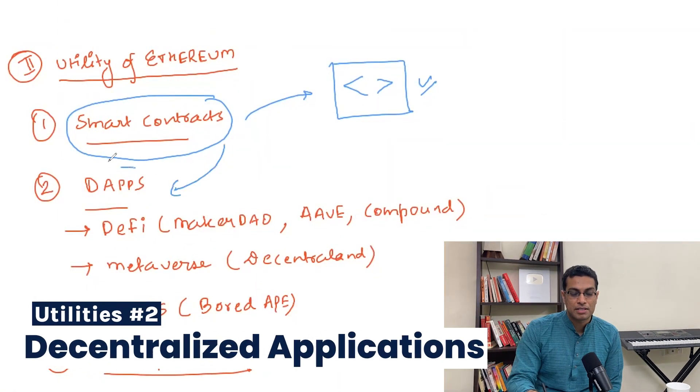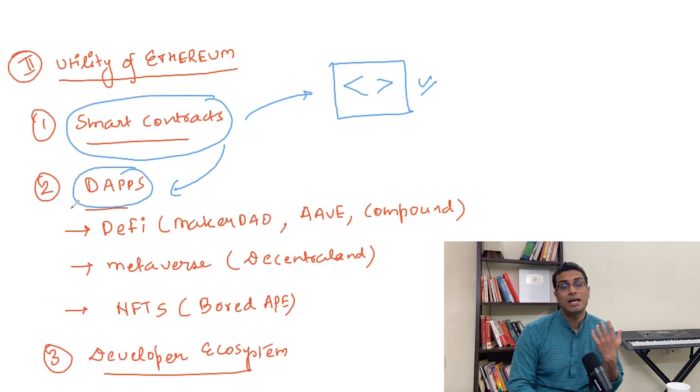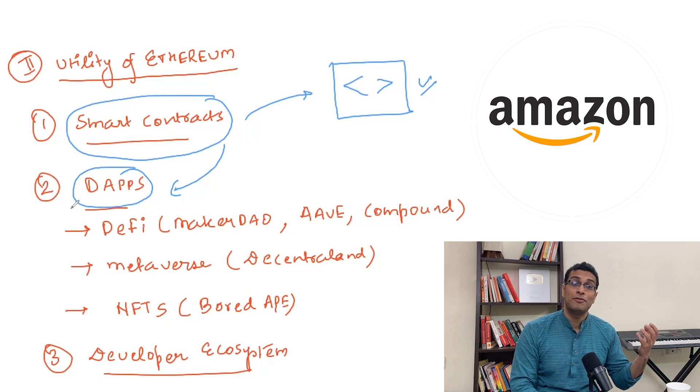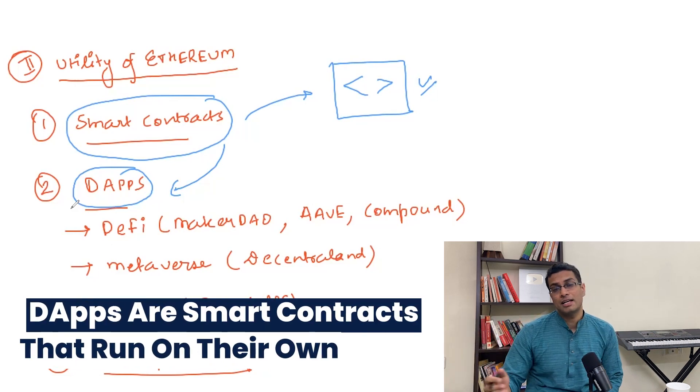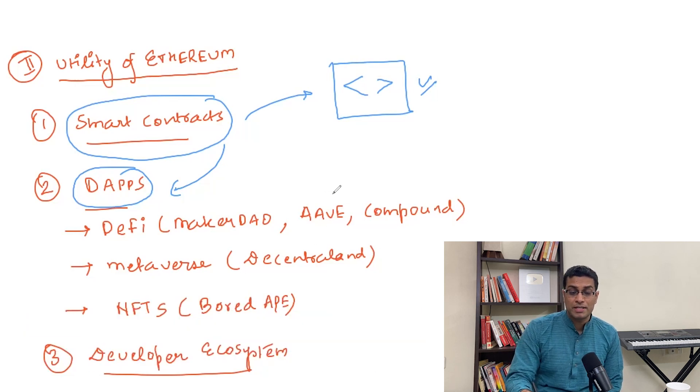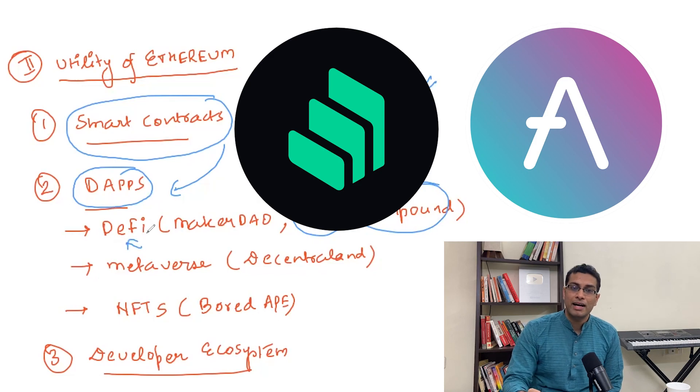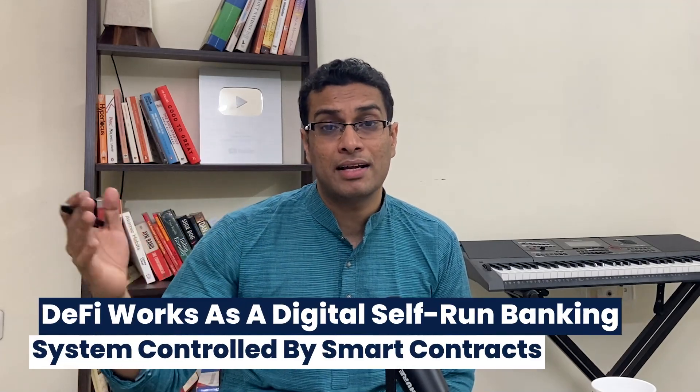Smart contracts are powering up something called DApps — decentralized applications. Centralized applications like Amazon are controlled by people such as Jeff Bezos. But decentralized applications are smart contracts pieced together that run on their own. A classic case would be something like Aave or Compound, which powers up the DeFi economy — new age banks that allow you to lend, borrow, and do peer-to-peer financing. These computer codes are building an industry called DeFi, and major banks like JPMorgan Chase are already trying to build their own DeFi-based applications.